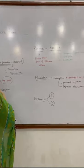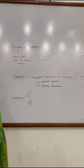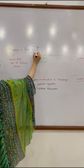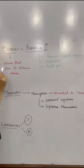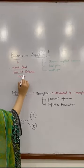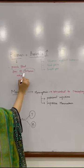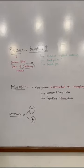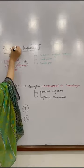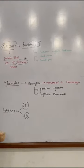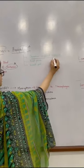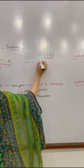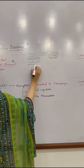Basophilia means increase in basophil count. It basically promotes blood flow due to histamine release — remember this with histamine release. The conditions in which basophils are raised are chronic myeloid leukemia (CML), lead poisoning, and smallpox.